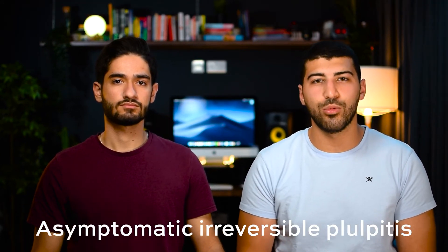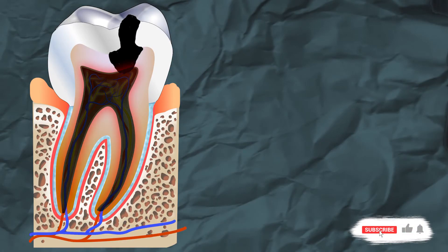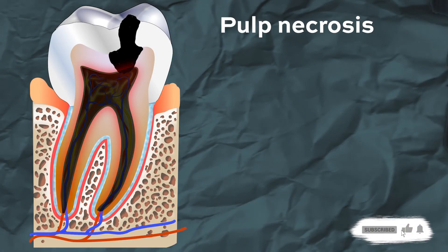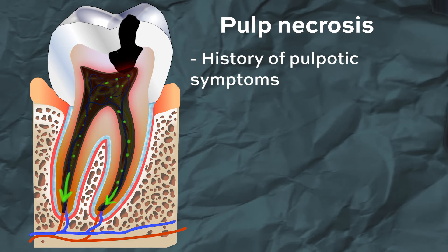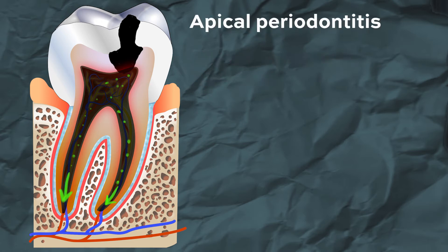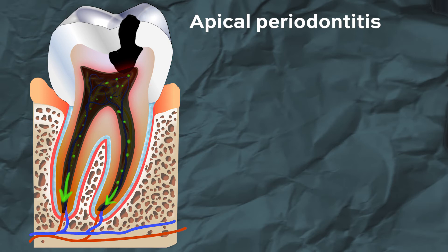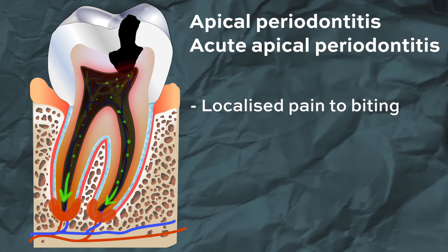Now as the infection advances, the pulp will start to die. This is called pulp necrosis, and at this stage the patient may actually present with a history of pulpitic symptoms which they no longer have. While the pulp is dying, the bacteria will also travel to the periapical tissues and cause symptoms of apical periodontitis, or as some others call it, acute apical periodontitis. At this stage they get a well-localised pain when biting, because the periodontal ligament is inflamed and biting stimulates the pain and pressure sensitive fibers in the area.